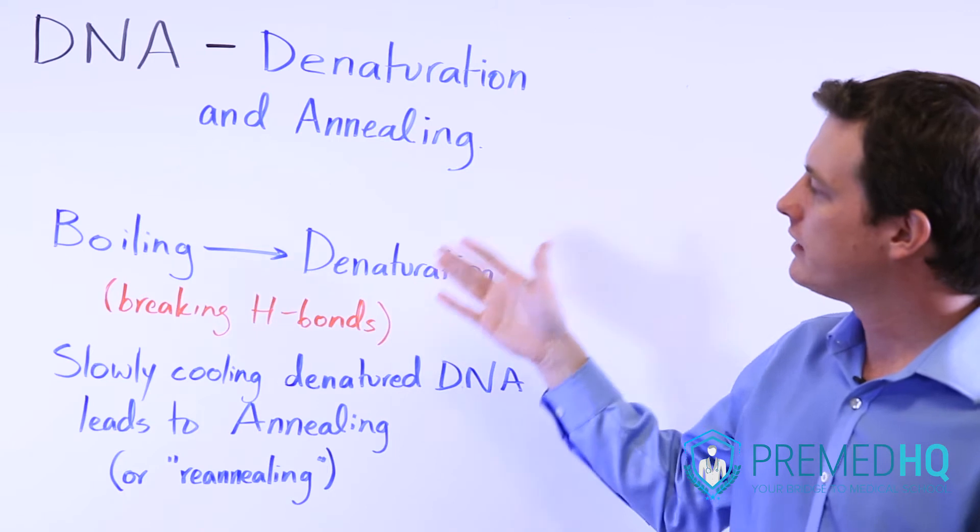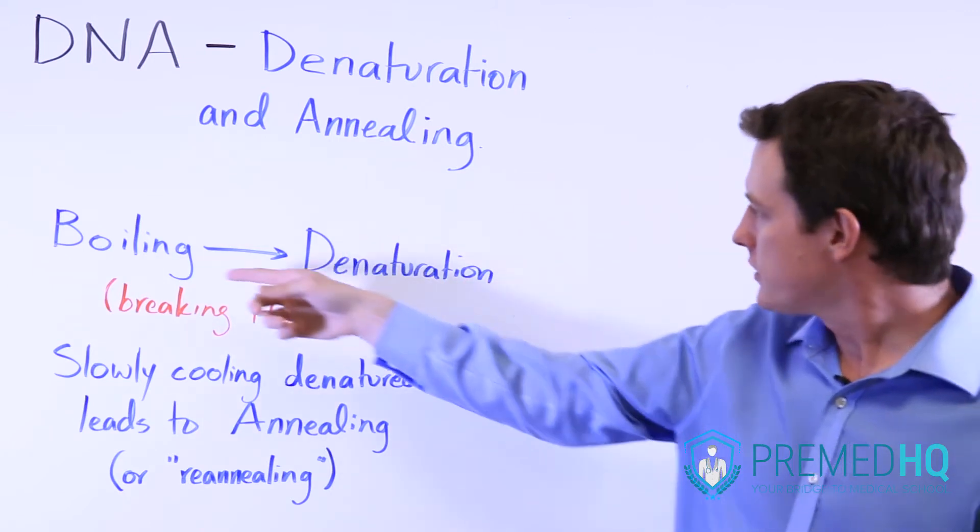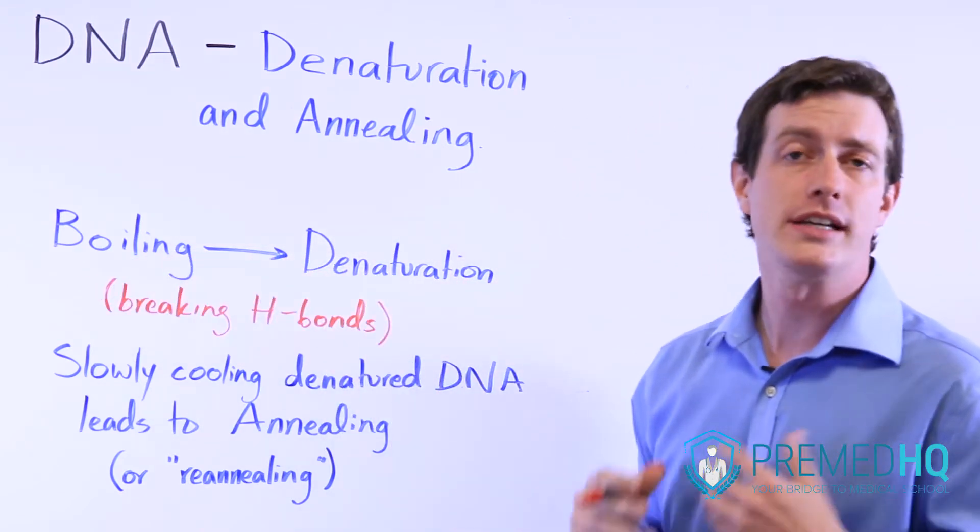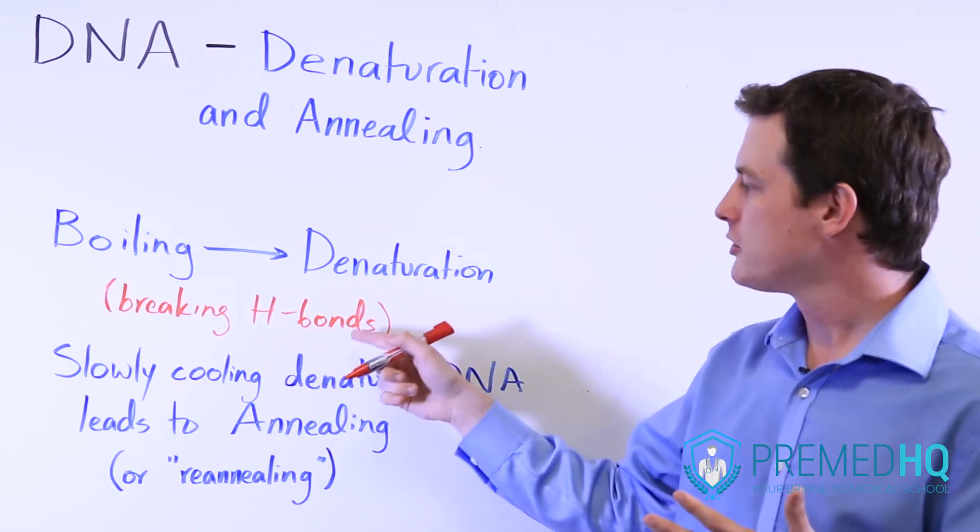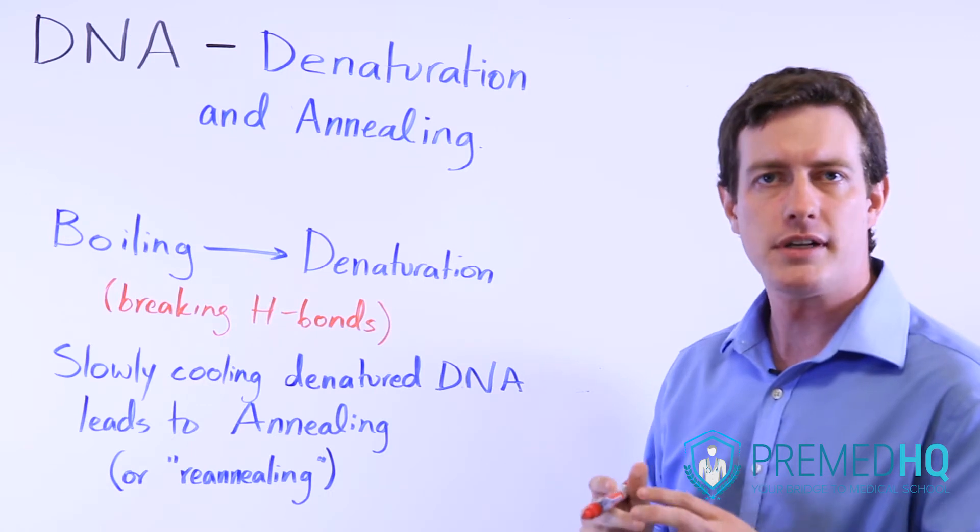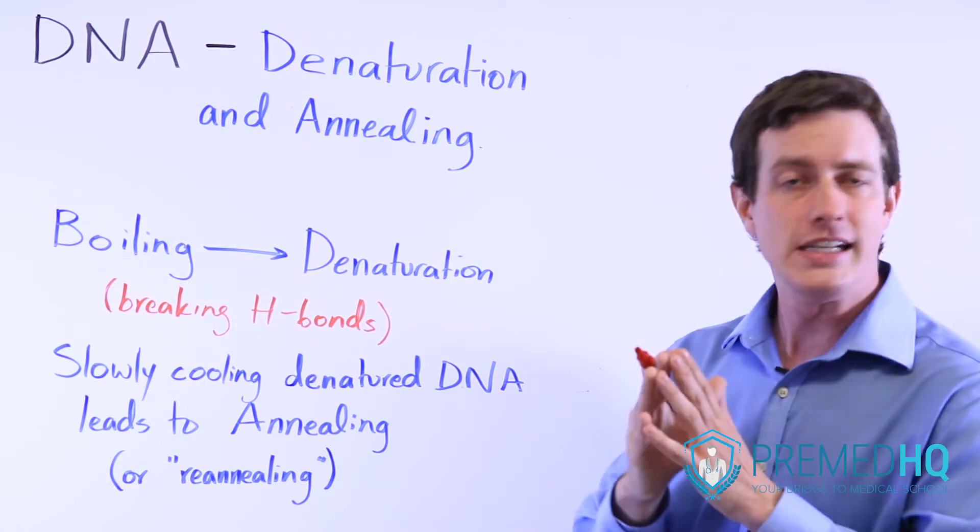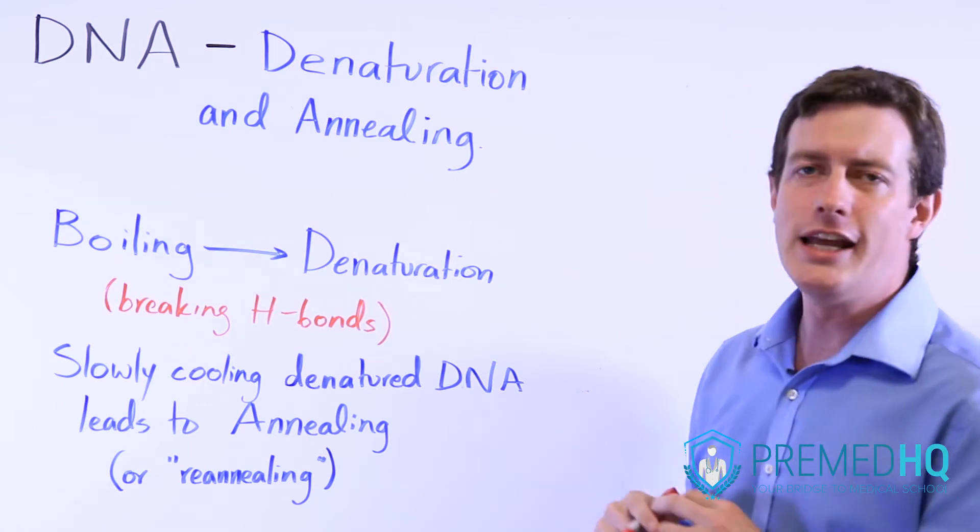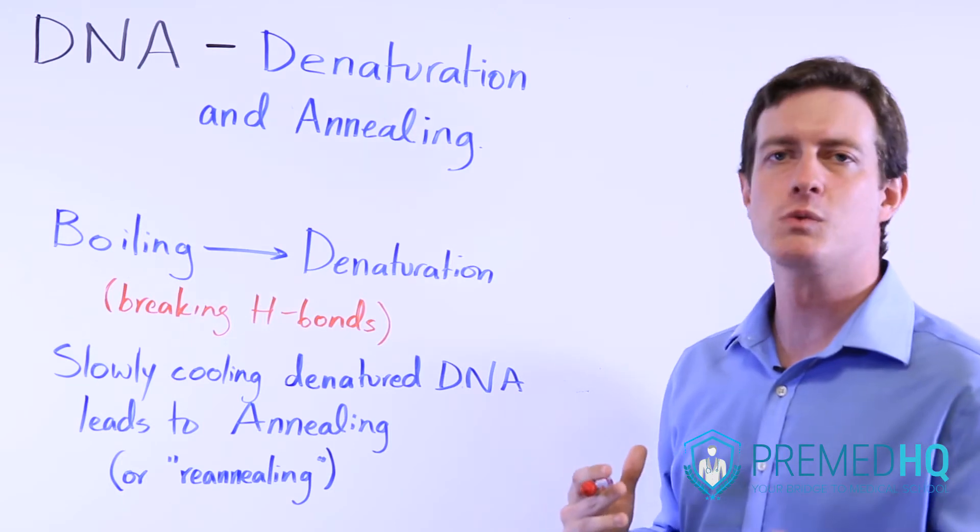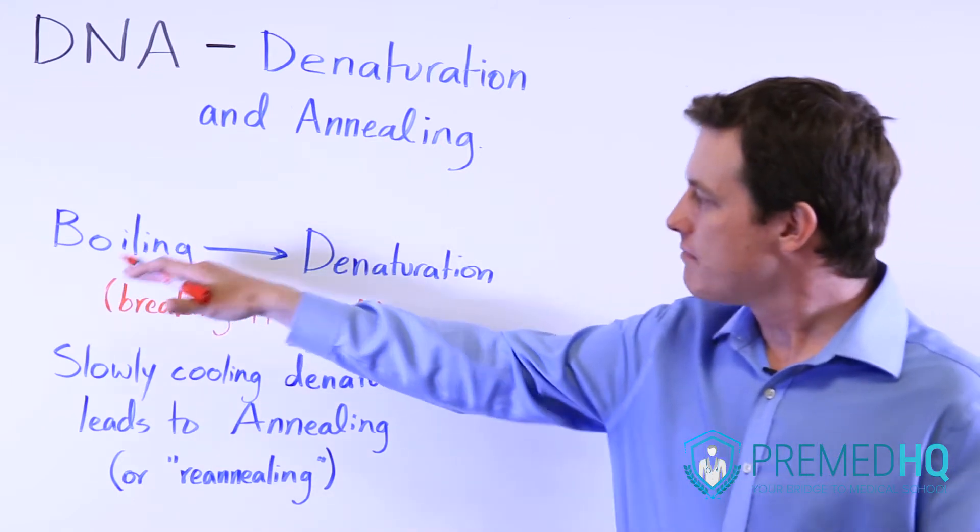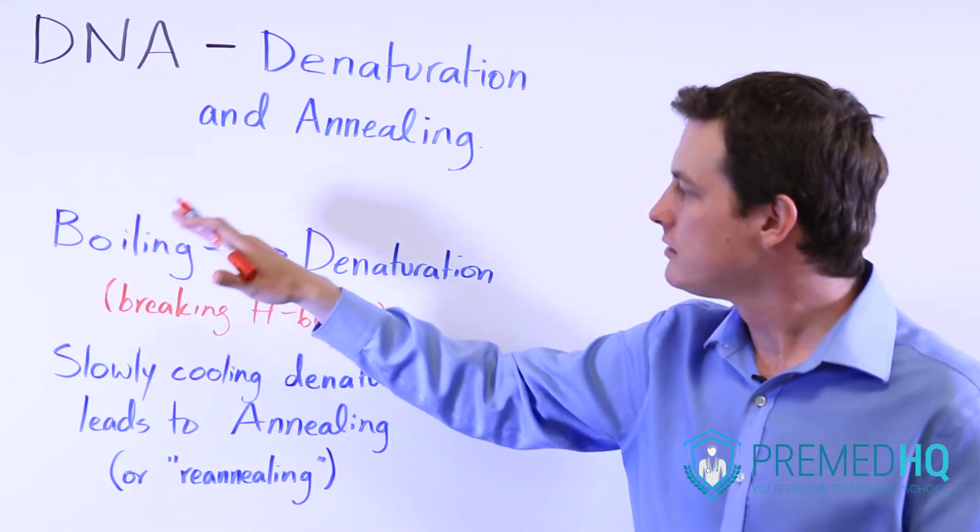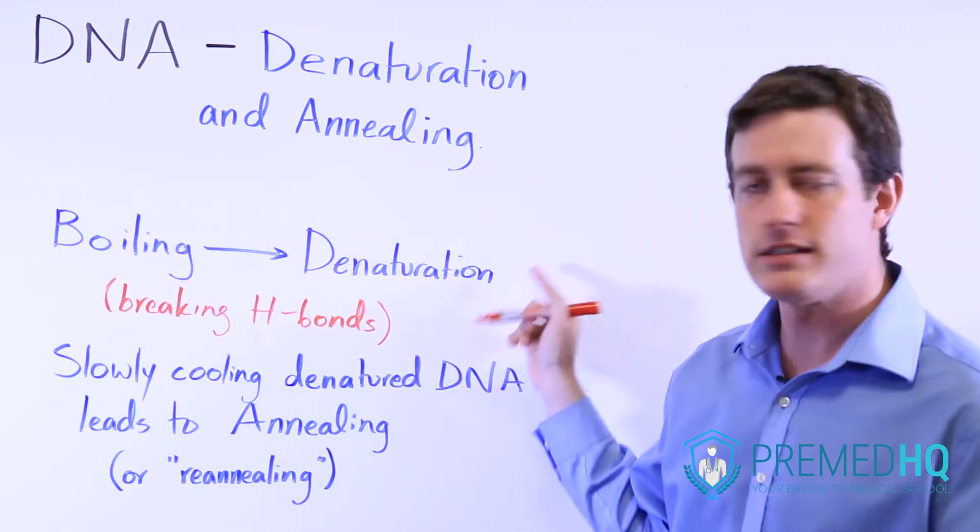The main way that you should know about DNA being denatured is through boiling. There are certainly other agents that can interfere with those hydrogen bonds and cause the DNA to denature, but if those come up on the MCAT, they will be mentioned in a passage. Boiling is the main one to be aware of.